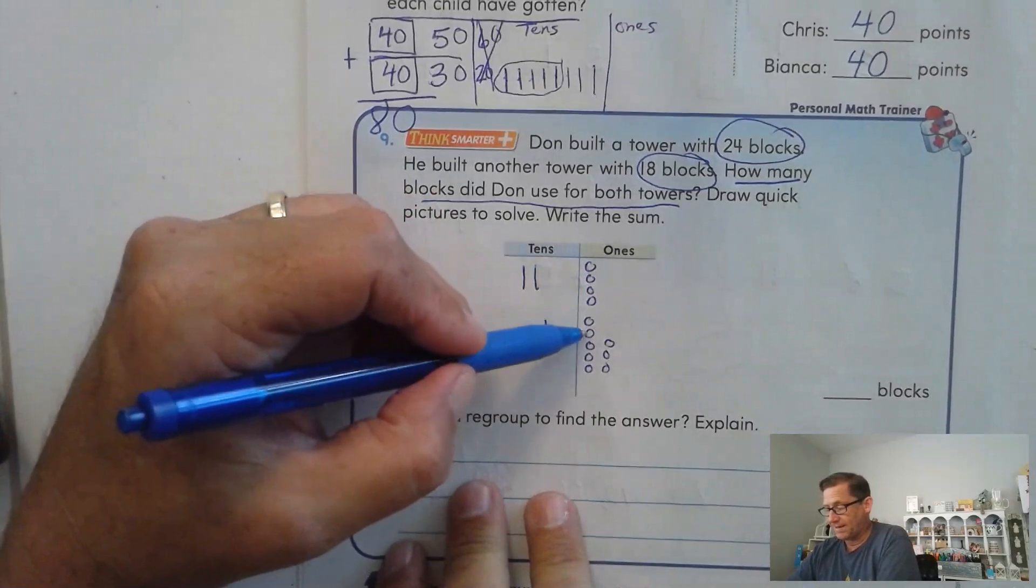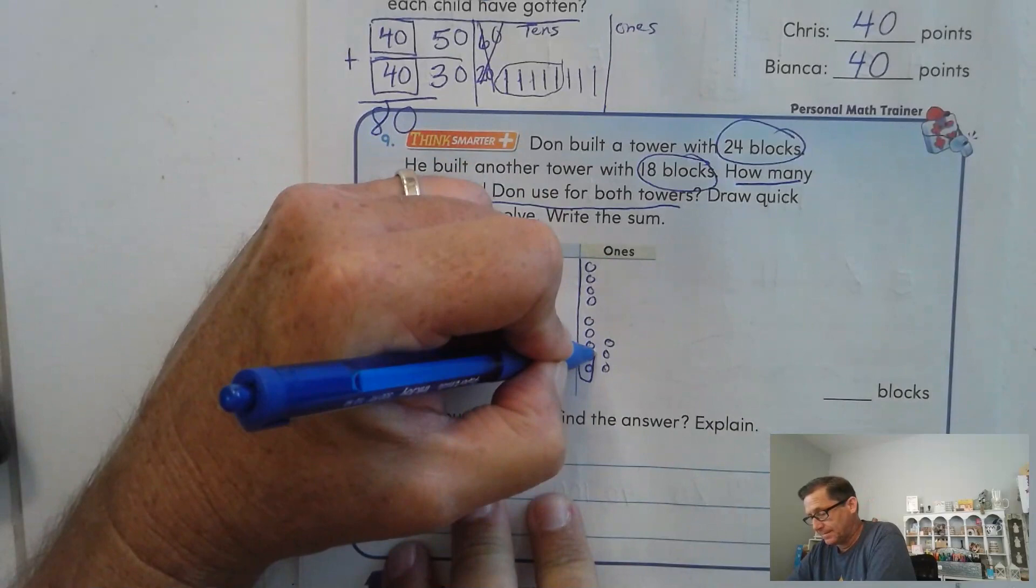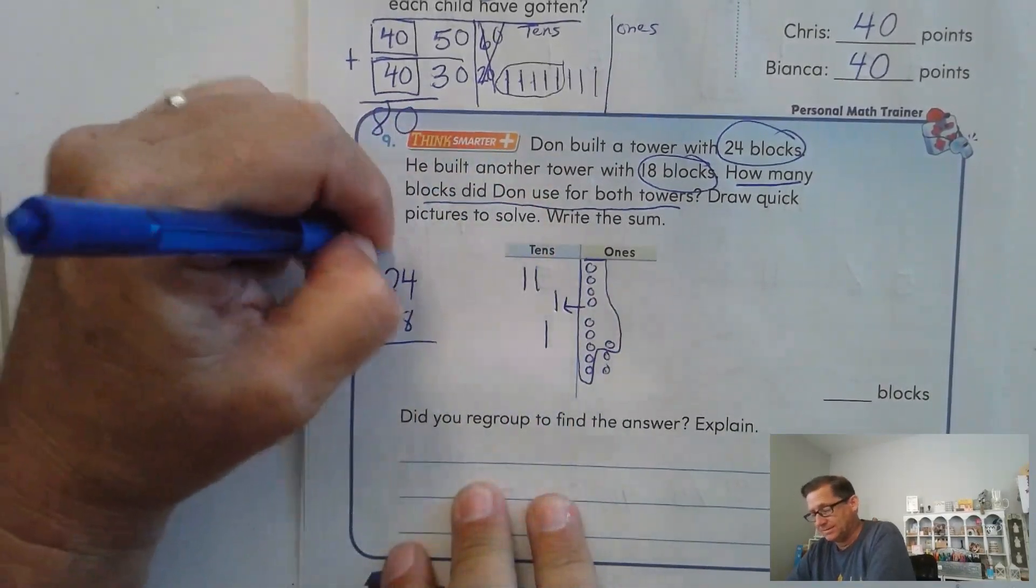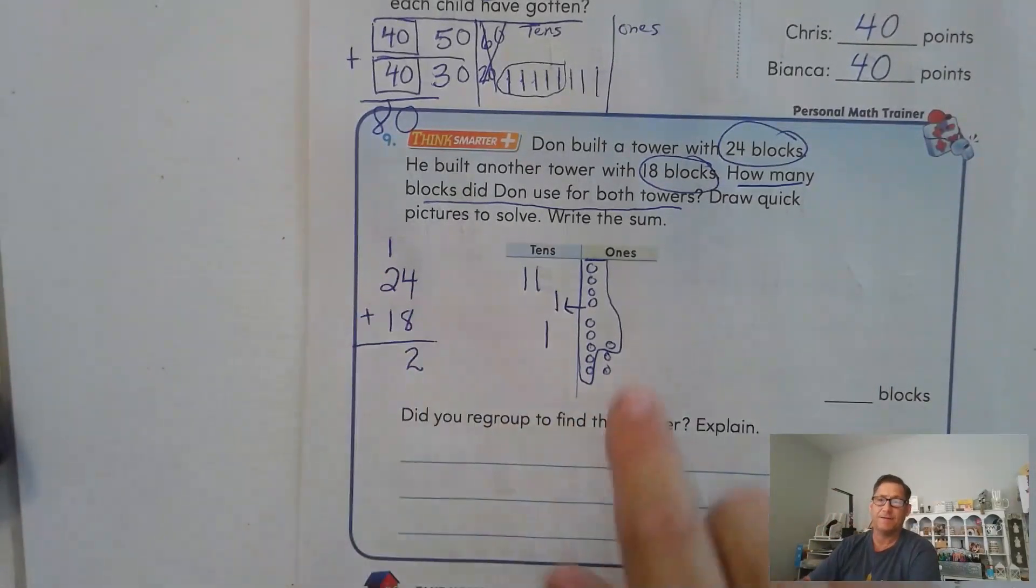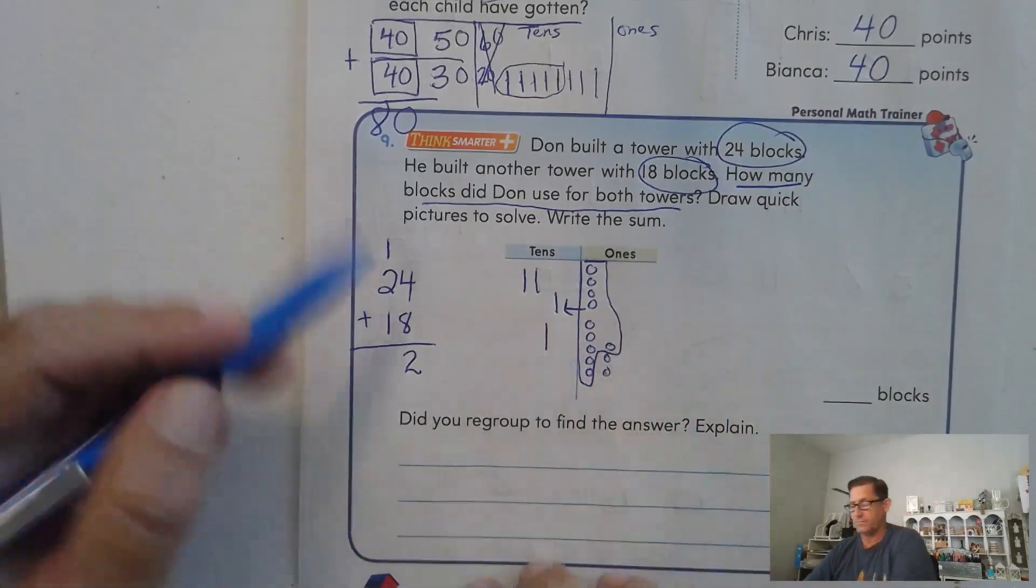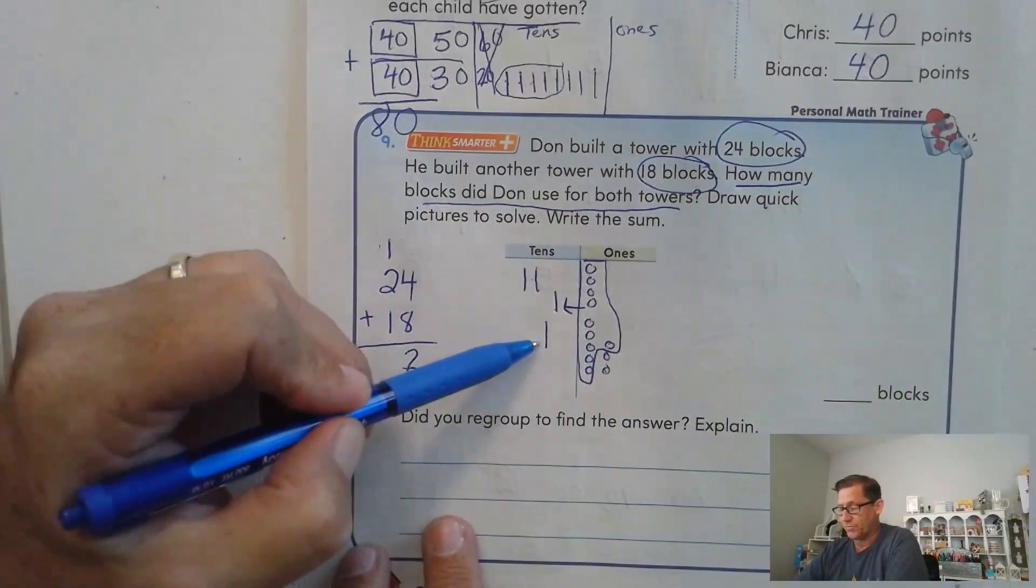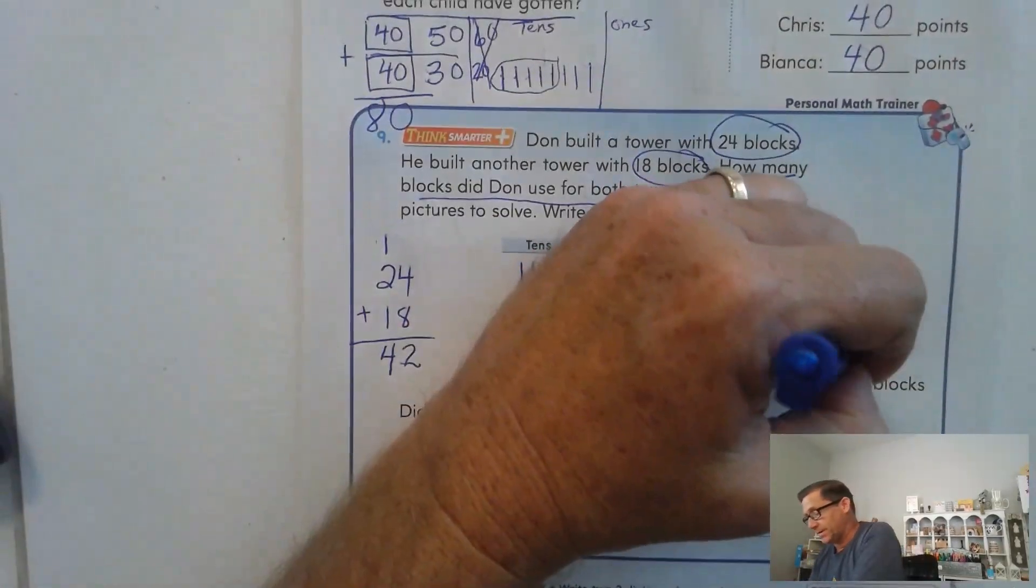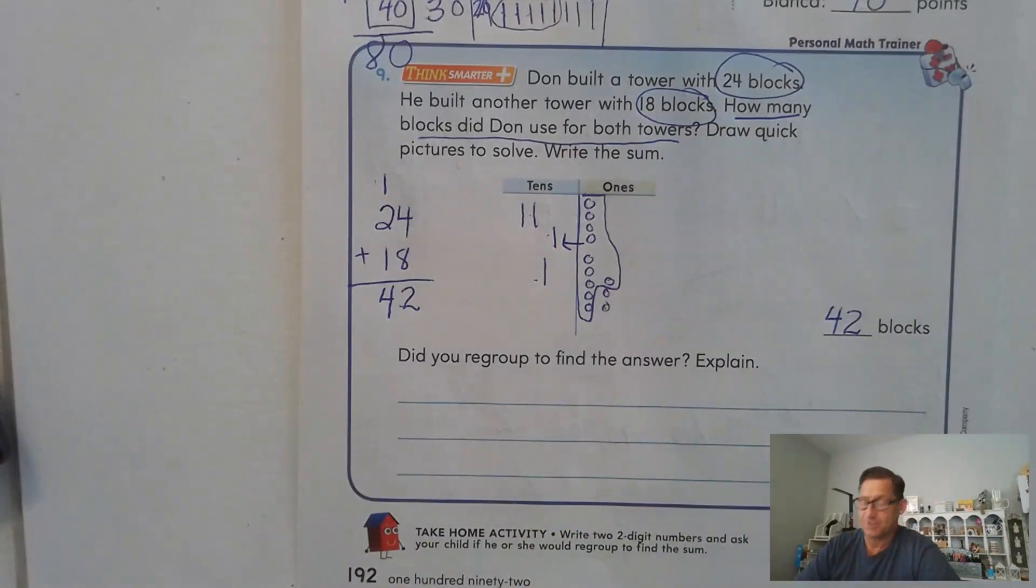We have 4, 5, 6, 7, 8, 9, 10, 11, 12. So yeah, we're going to trade 10 ones for a 10, because 8 and 4 is 12. In 12, we have one 10 and two ones. Now, how many tens do we have? We have 2, 3, plus the regrouped 10, 4. So he used 42 blocks. Did we regroup to find the answer? Yes.